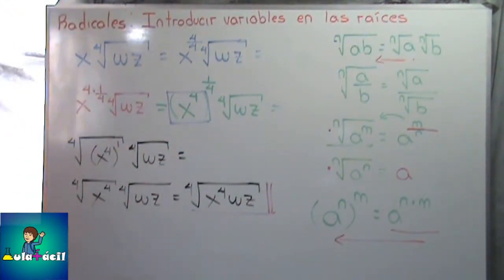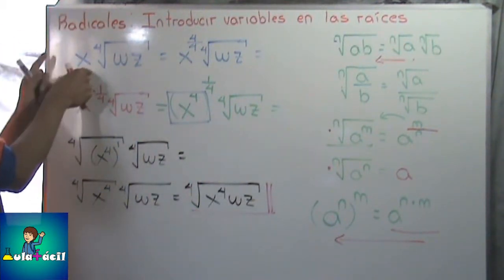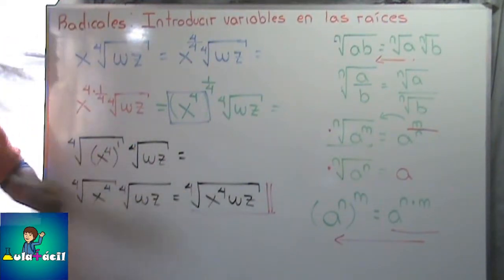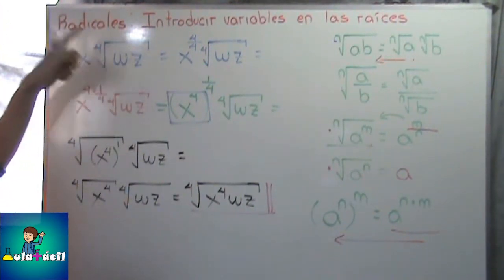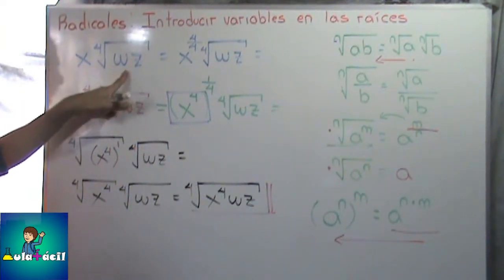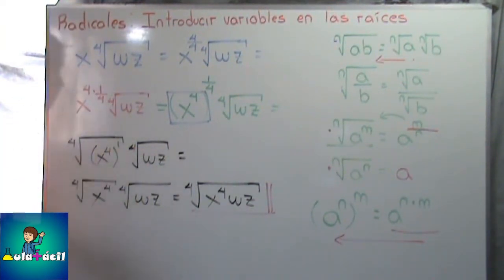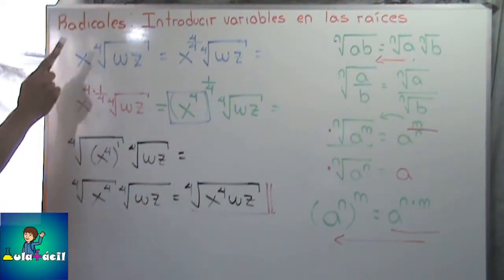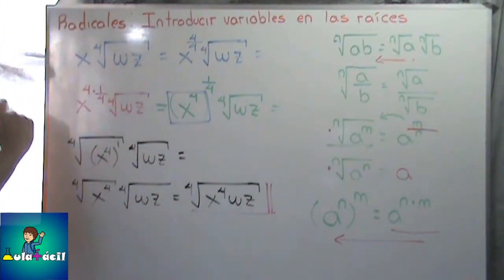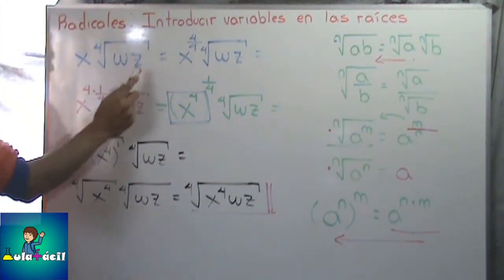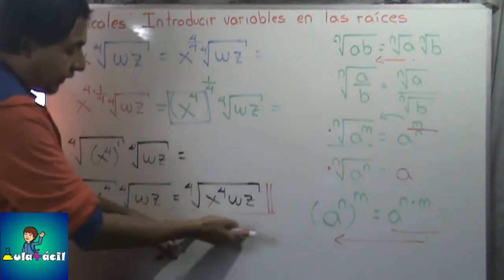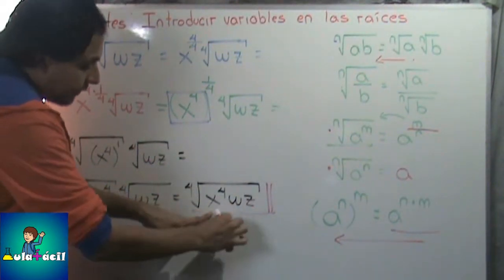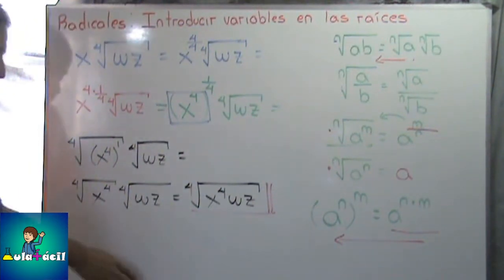Como pueden observar, aunque las variables sean completamente diferentes, yo quise meter esta X y la metí. No importa las variables — puede que tanto afuera como adentro estén la misma, hacen el mismo procedimiento y simplifican lo más que pueden, o puede que la variable de afuera no sea la misma que la de adentro. Si les piden introducirla dentro de la raíz, lo pueden hacer; lo único es que al final ya no se va a poder simplificar más. Vamos con otro ejemplo.